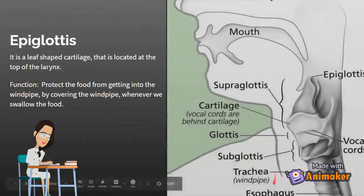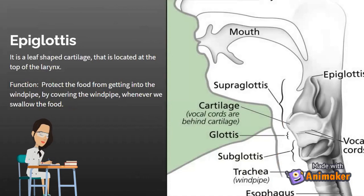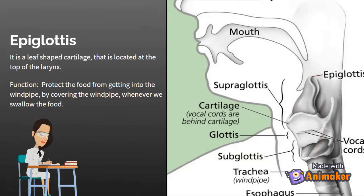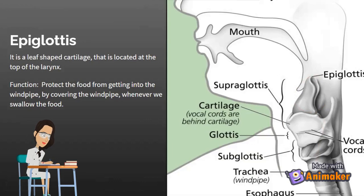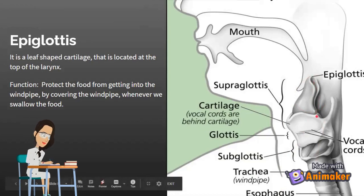Now we'll be learning about the epiglottis. The epiglottis is a leaf-shaped cartilage located at the top of the larynx. This is the epiglottis — this little flap-like thing. Its function is to protect the food from getting into the windpipe by covering the windpipe whenever you swallow food. It's like a flap because it covers your windpipe when you swallow so you don't choke.